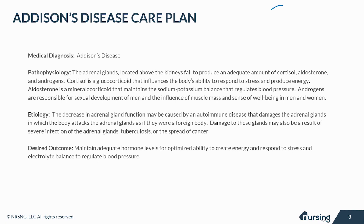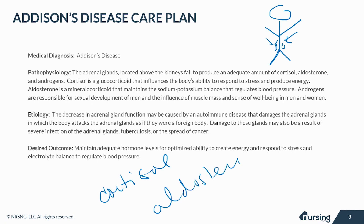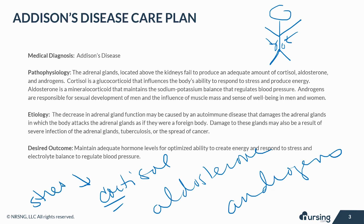With Addison's disease, the adrenal glands, which are located above the kidneys, fail to produce an adequate amount of cortisol, aldosterone, and androgens. Cortisol is a glucocorticoid that influences the body's ability to respond to stress and produce energy. Aldosterone is a mineralocorticoid that maintains the sodium-potassium balance that regulates blood pressure. Androgens are responsible for sexual development of men and influence muscle mass and sense of well-being in men and women.